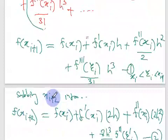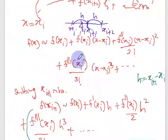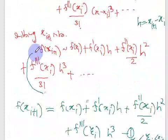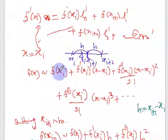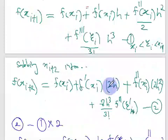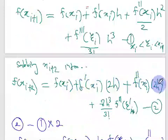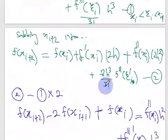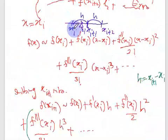Substituting xi plus 2 into the series gives f(xi plus 2) equals f(xi) plus 2h times f-prime(xi) plus 2h squared divided by factorial 2 — which simplifies to 2h squared — times f-double-prime(xi), plus the error term. The error value psi-dash is located in between xi and xi plus 2.